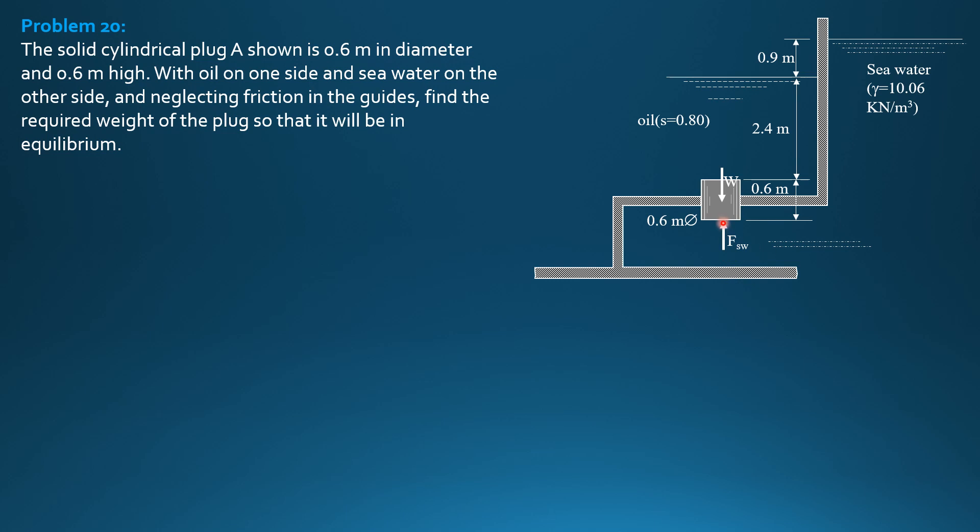Specific weight of the pressure at the centroid times area. The area is circular, 0.6 meter in diameter. Then there is also a force that pushes the top downward due to oil. Pressure at the centroid of the top times area.